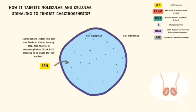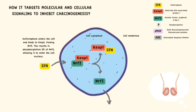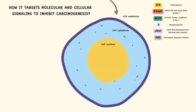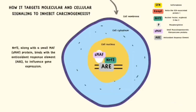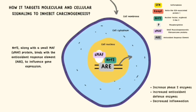Then, sulforaphane enters the cell and binds to KEAP1, freeing NRF2. This results in phosphorylation of NRF2, allowing it to enter the cell nucleus. NRF2, along with a small MAF protein, binds with the antioxidant response element, ARE, to influence gene expression. This will increase antioxidant defense enzymes and decrease inflammation.